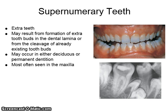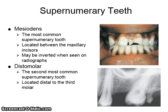Supernumerary teeth are extra teeth that may result from the formation of extra tooth buds in the dental lamina or from the cleavage of already existing tooth buds. They may occur in either deciduous or permanent dentition and are most often seen in the maxilla. The most common supernumerary tooth is the mesiodens, located between the maxillary incisors, and may be inverted when seen on radiographs. A distomolar is the second most common supernumerary tooth and is located distal to the third molar.